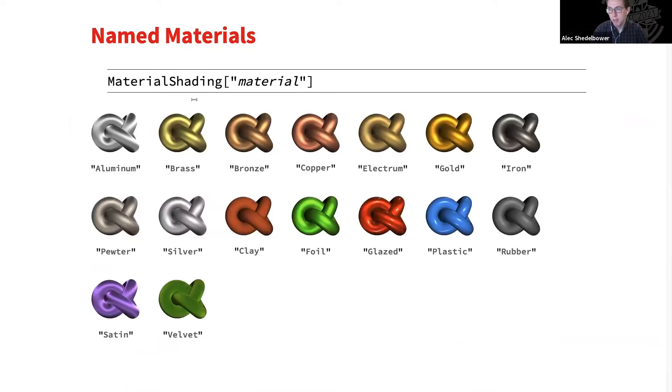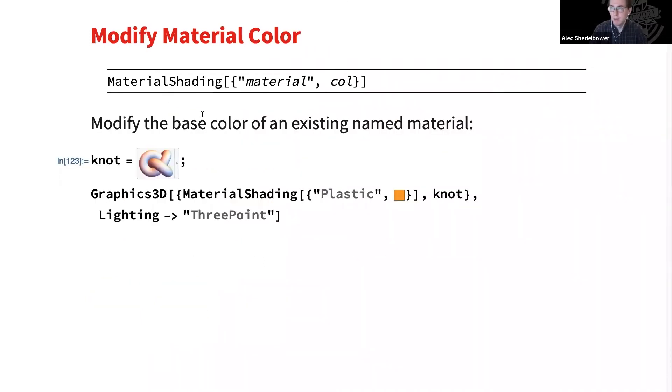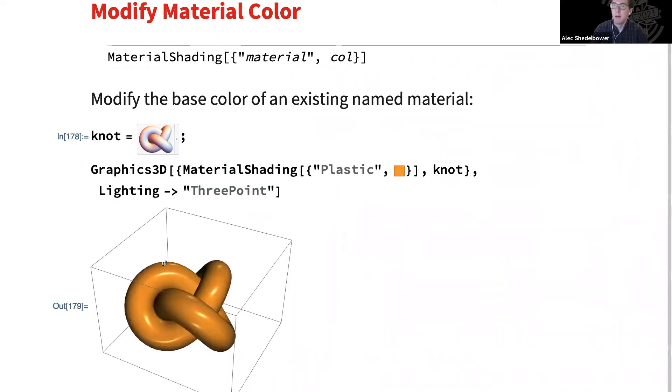In general, anywhere where you can expect to use a 3D graphics directive, you should be able to use MaterialShading. Now, as far as what materials are available to you, here's a complete list of our named material presets. So in order to use these, you just pass your string name as a parameter to MaterialShading, and you'll get this result. So you see about half of these are metals, and we have a few other miscellaneous materials that kind of show off certain effects that MaterialShading can do. If you want to make a little more custom material, maybe change the color, we have the syntax here where you can pass in a new base color to override the default one. So here, let's say I want to render this knot using plastic. I don't want that default blue plastic color. I can pass in orange instead, and we get a nice orange knot.